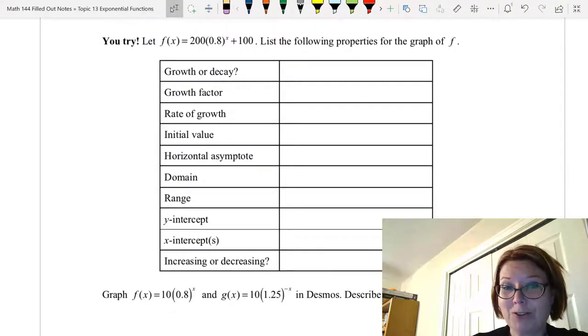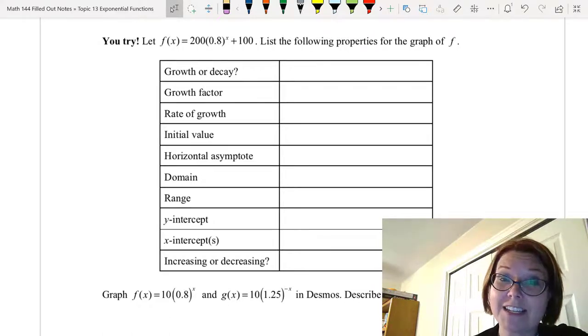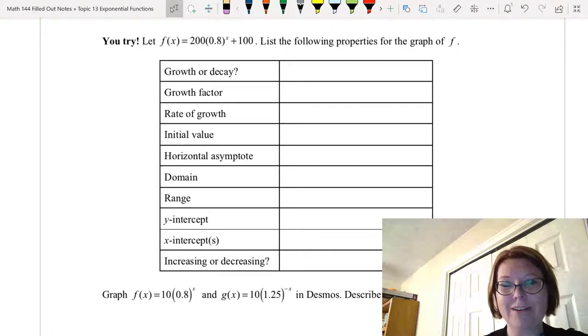All right I have a problem for you to try. I want you to list a whole bunch of properties for this function. It's f of x equals 200 times 0.8 to the x power and then plus 100 outside of the power. So pause this video and give it a try. List as many properties as you can.